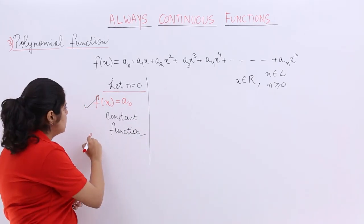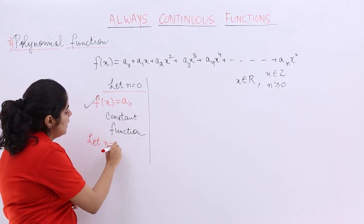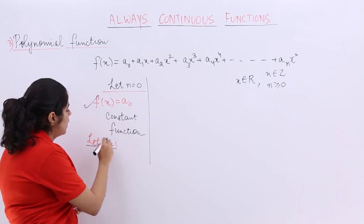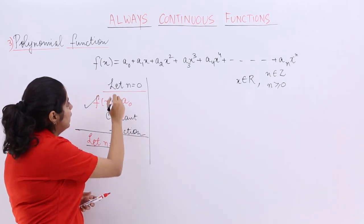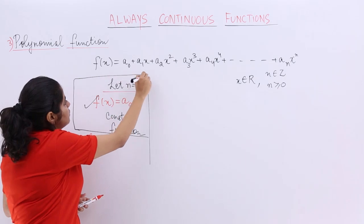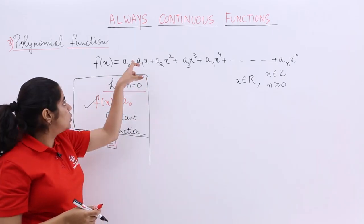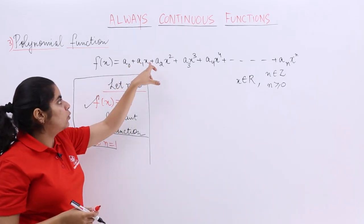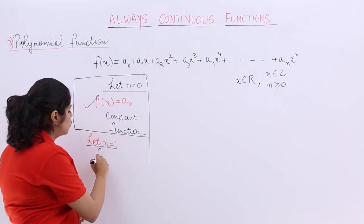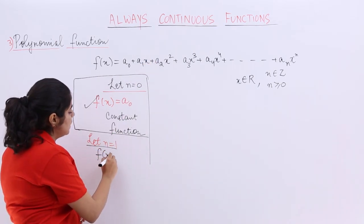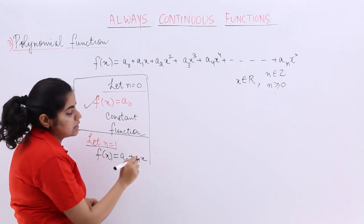What about when n is equal to 1? So next, let n equal to 1. When n is equal to 1, that means here the highest power is 1, so my function is basically a₀ plus a₁x.